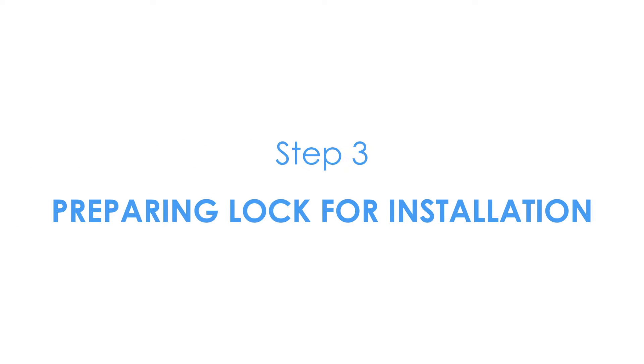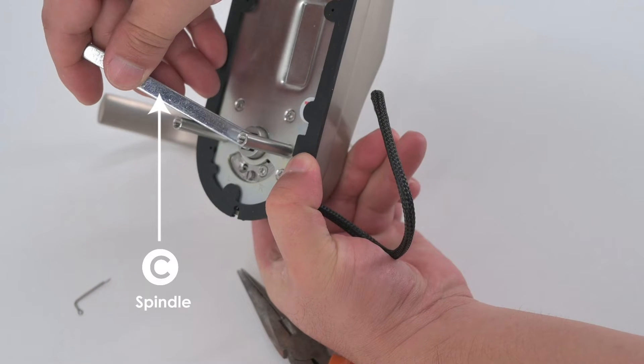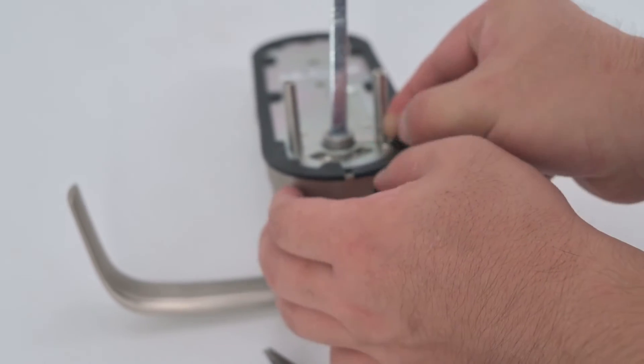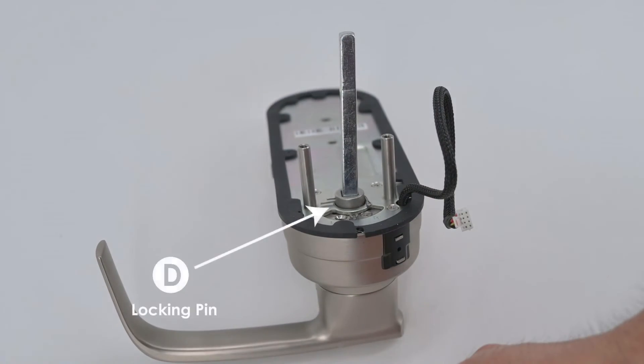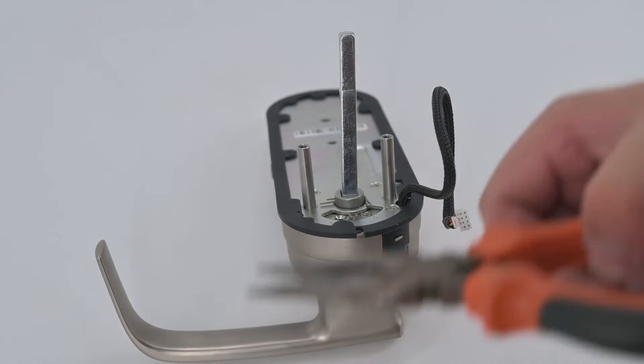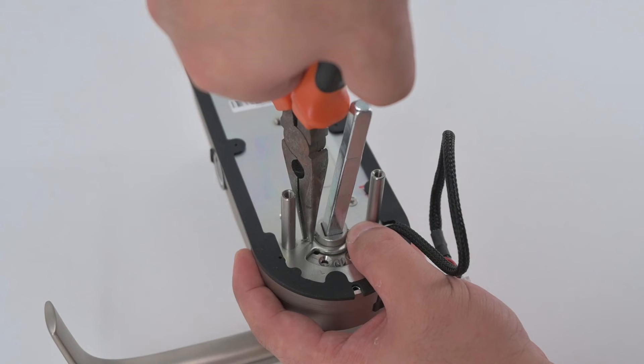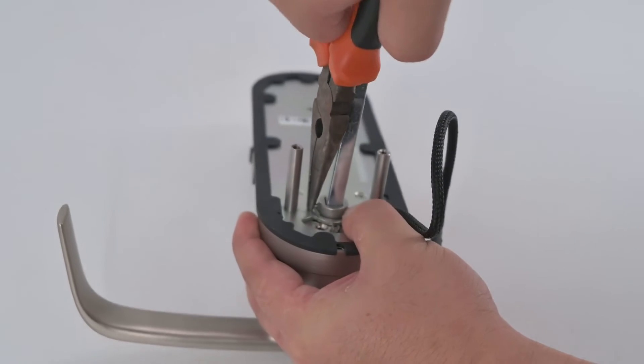Step 3: Preparing lock for installation. Install spindle C, the side with holes into the base of the lock. Align the holes located in the 3 o'clock and 9 o'clock position. Insert locking pin D into the hole as shown. Carefully bend the end of the locking pin with a needle nose pliers. Failure to bend the locking pin and to freely turn handle without obstruction will result to malfunction.